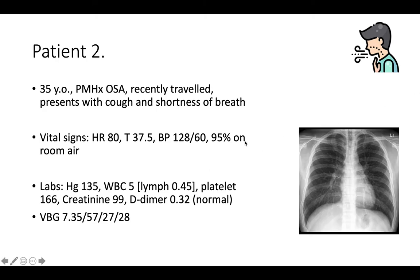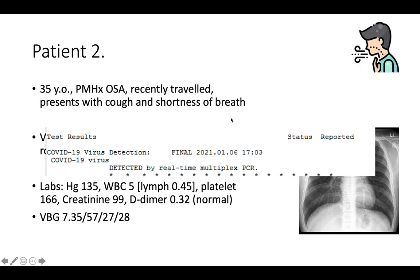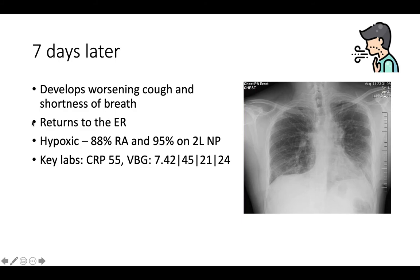The patient was discharged home, and subsequently their COVID swab came back positive. I also would have discharged this patient. Seven days later, they presented with worsening cough, shortness of breath, hypoxia, and a CRP that wasn't remarkably elevated. A low CRP is really useful to rule out badness, but a high CRP probably isn't specific. The chest x-ray was clearly worsening.